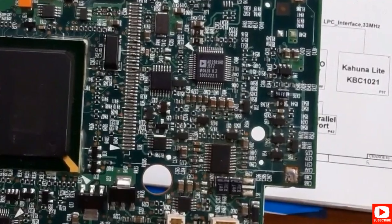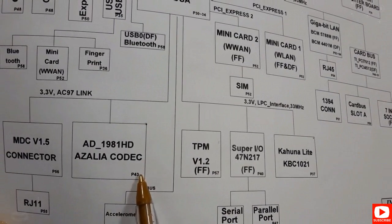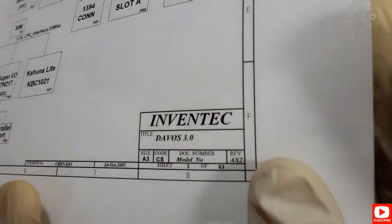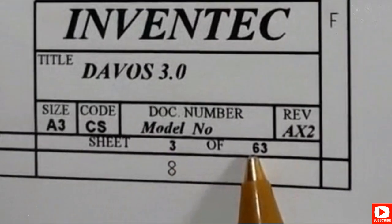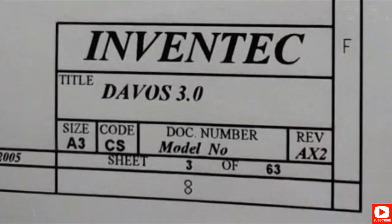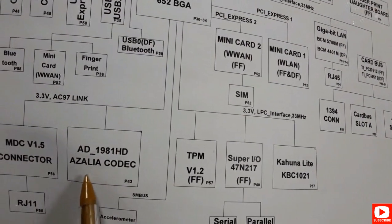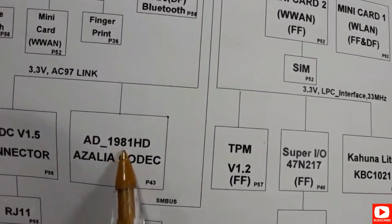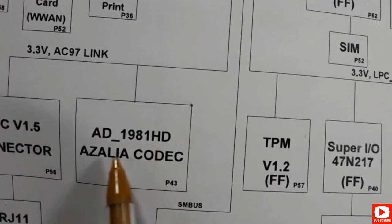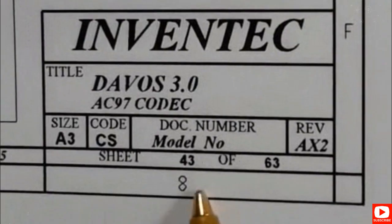Now we're going to check page 43 to see the circuit diagram of this IC. We are currently on sheet 3 of 63. Let's navigate to page 43 and look for the circuit diagram of this IC with reference AD1981HD. Here is page number 43.